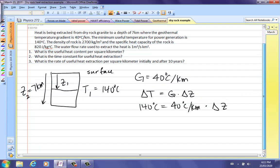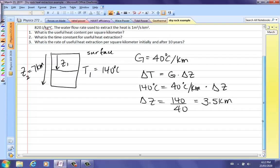In this case, it's between the surface and that temperature T1. So you just take delta Z is 140 divided by 40, and this is 3.5 kilometers, and since Z at the surface is 0, that means the depth for Z1 is 3.5 kilometers.